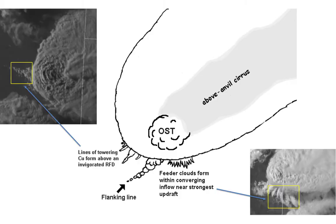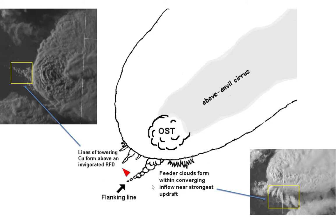This is a schematic of what a supercell thunderstorm typically looks like from a satellite perspective. The overshooting top appears in the visible imagery. The above anvil cirrus plume corresponds to a specific region in the visible imagery. If the storm is quite intense, you'll typically have a crisp edge to the anvil cirrus. Another feature that may appear is the flanking line, which is the boundary between the outflow region and the inflow region of the storm. In the inflow region, inflow feeder clouds form within converging inflow near the strongest updraft, and they look like this typically in the visible imagery.